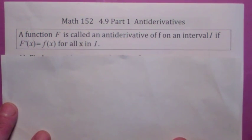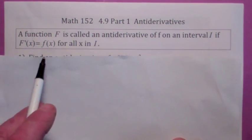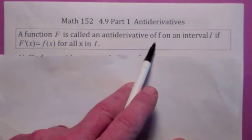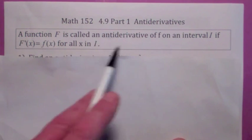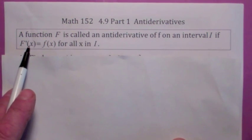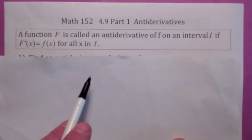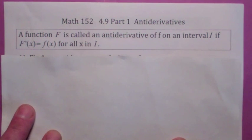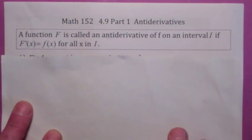First topic here in 4.9 is the definition. We say big F is an antiderivative of little f on an interval I, if when you take the derivative of big F, you get little f for all x in I. We always talk about an antiderivative on an interval.